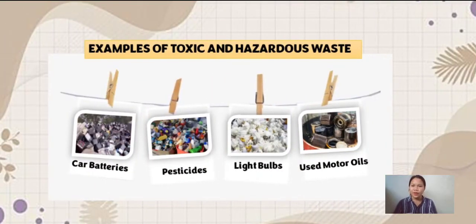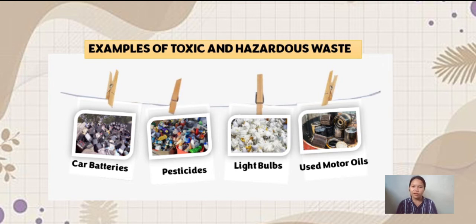Examples of toxic and hazardous waste are car batteries, pesticides, light bulbs, and used motor oils. This waste can cause harmful effects on both human health and on the environment. And to eliminate and control this waste, we must know what waste treatment is.